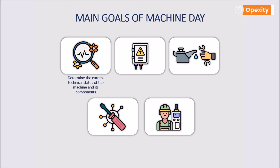The next thing is to identify and visualize those irregularities that they notice while cleaning the machine. All of this is done in order to prepare a list of malfunctions to be removed by the maintenance department. It is not at all just about cleaning.